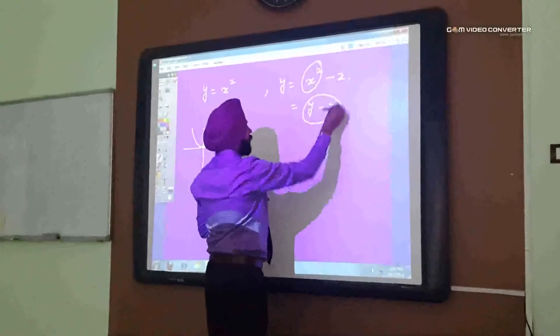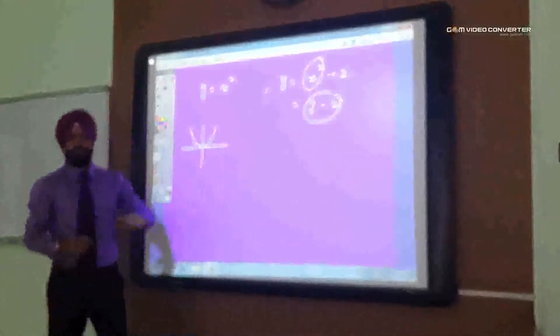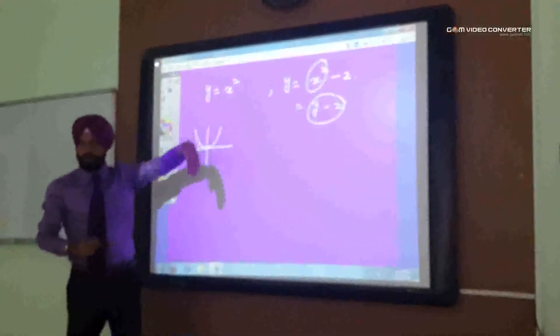It means y minus 2. So, y minus 2, it means what will happen? The curve will go down. The curve will go down. How much? 2 units. This is vertical stretch.